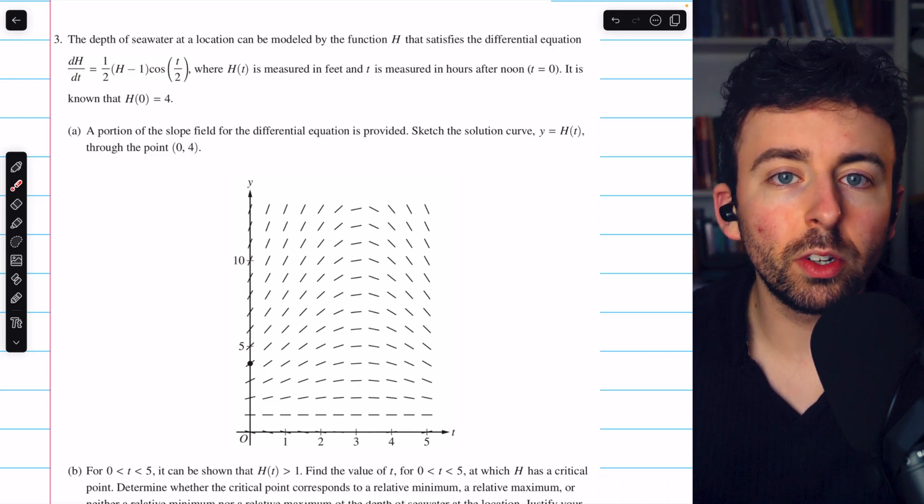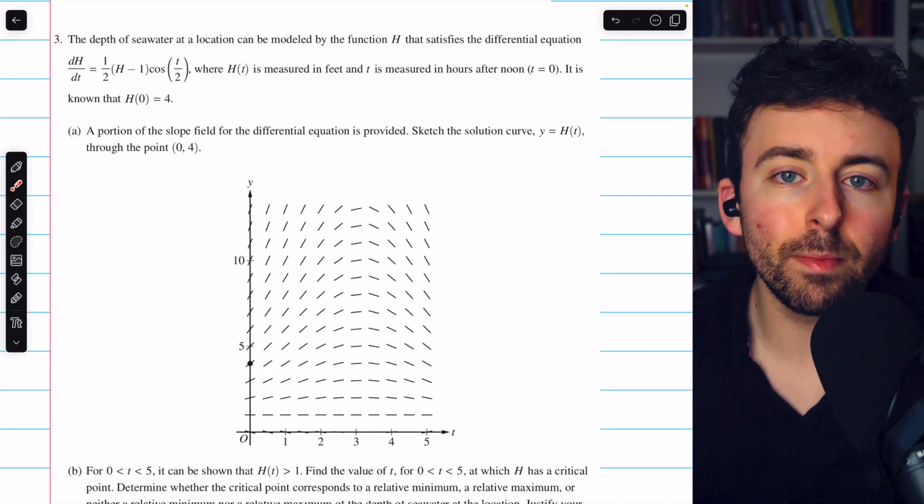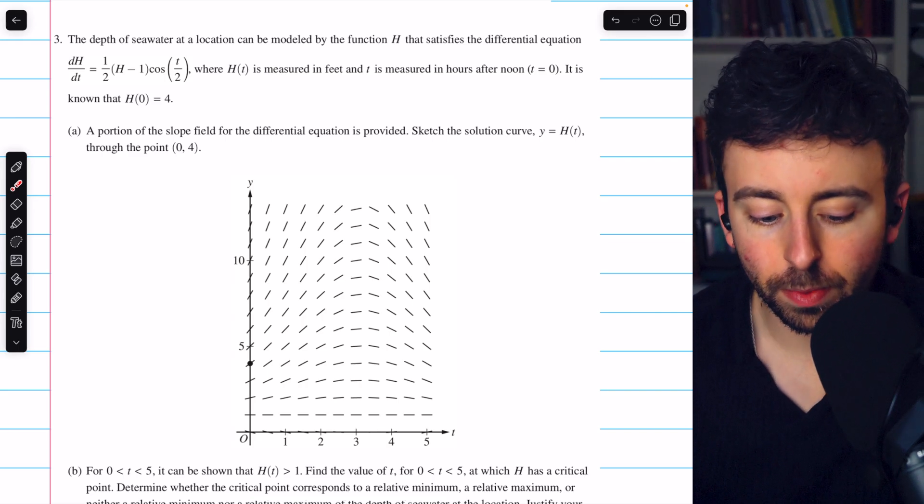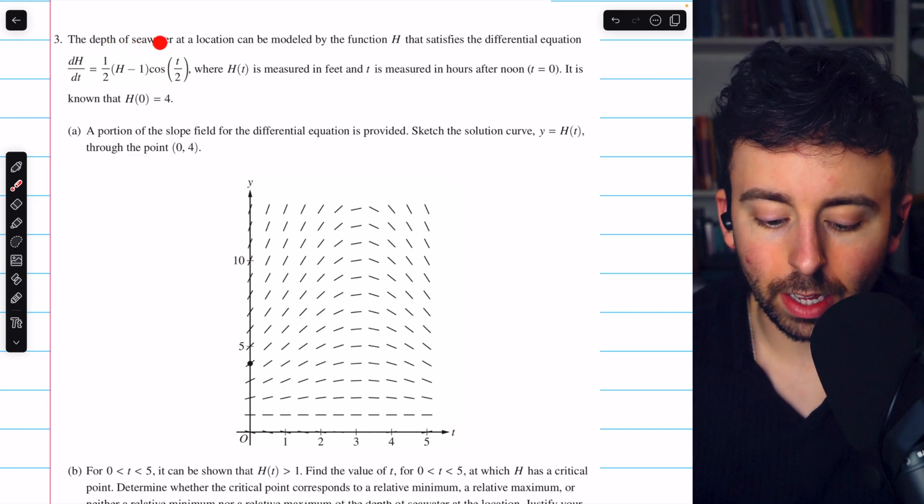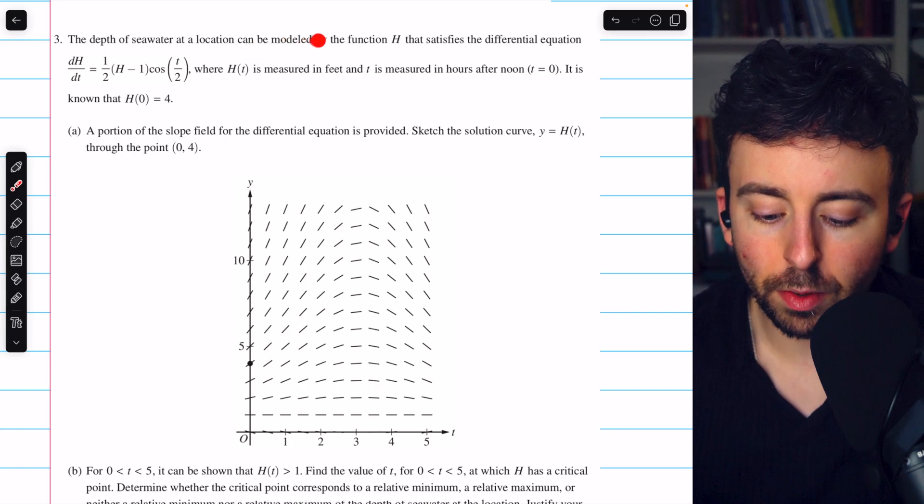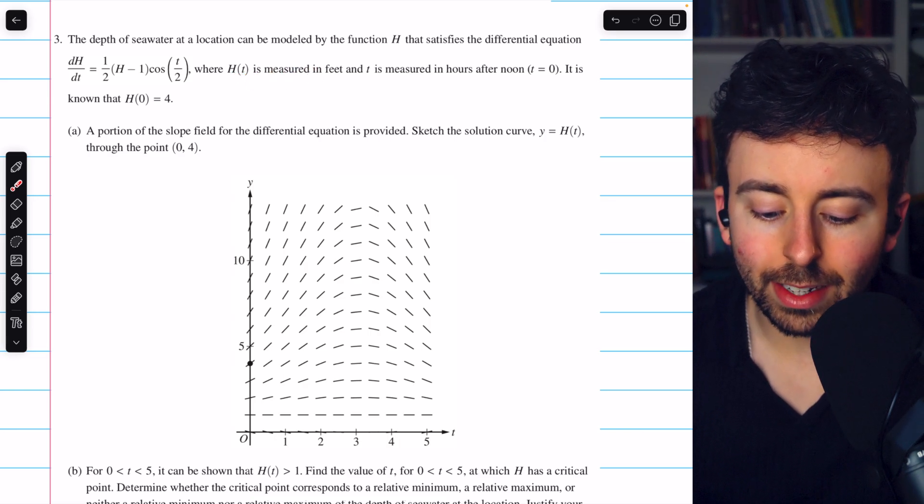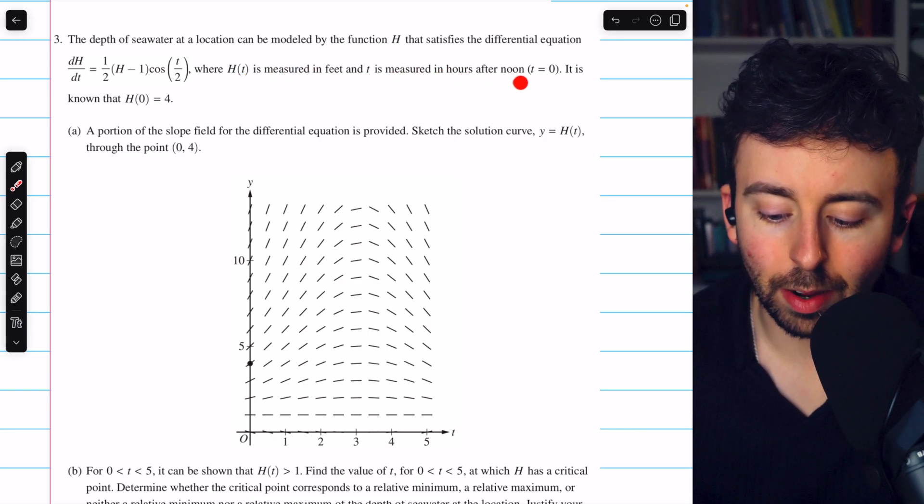This is Free Response Question 3 from the 2024 AP Calc AB/BC exam. It's part of the No Calculator section. The depth of seawater at a location can be modeled by the function h that satisfies the differential equation given here, where h(t) is measured in feet and t is measured in hours after noon, so noon is at t equals zero.